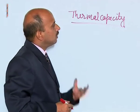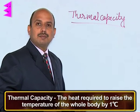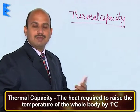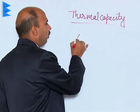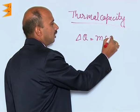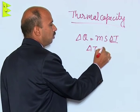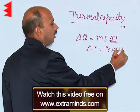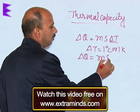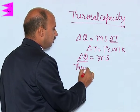Thermal capacity of a body is defined as the heat required to increase the temperature of the whole body by 1 degree Celsius or 1 Kelvin. So, we can write delta Q, the heat given, is equal to M times s times delta T. If delta T is equal to 1 degree Celsius or 1 Kelvin, then delta Q equals M times s, and this can be written as thermal capacity.